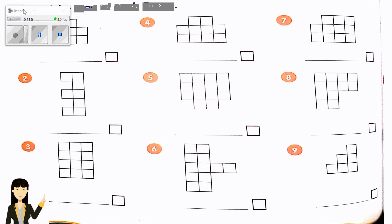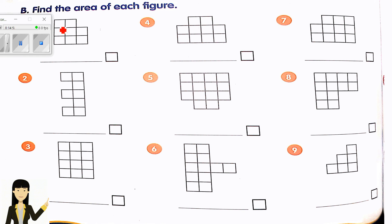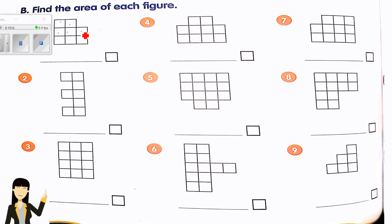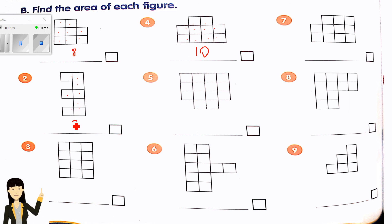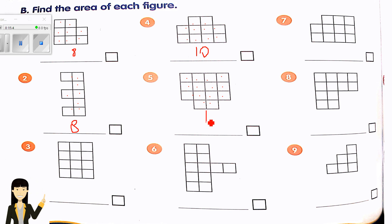Let's find the area and count the squares. For number one, count carefully and mark each square so you don't make mistakes. Counting across: one through eight. Then counting down: one through fourteen. Total is 14 square units.